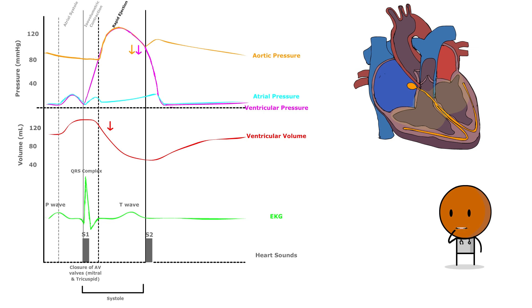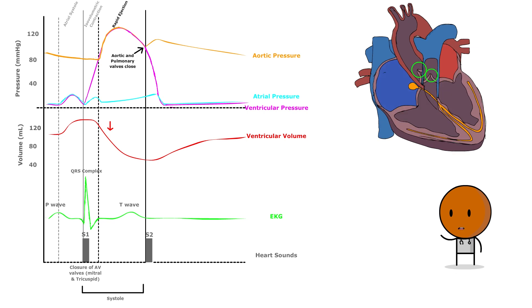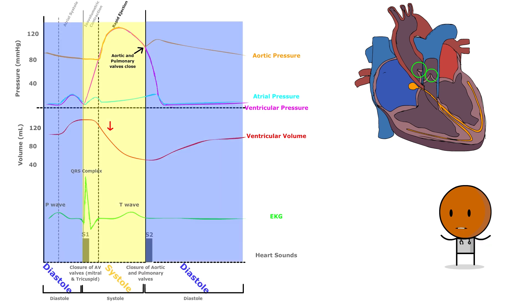Once the ventricular pressures fall below those in the aorta and pulmonary artery, the semilunar valves shut, delineating the end of systole and the start of diastole, an event marked by the second heart sound, S2.